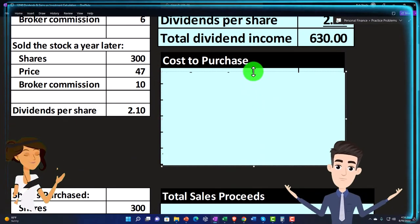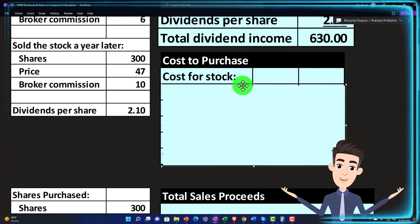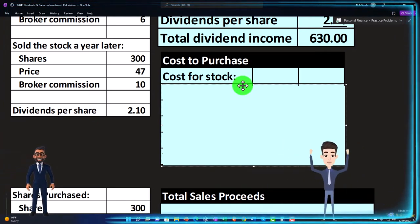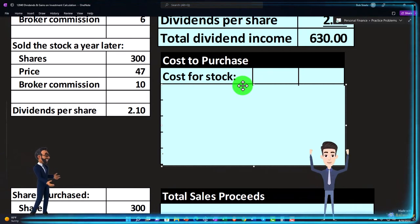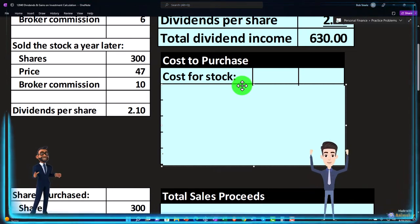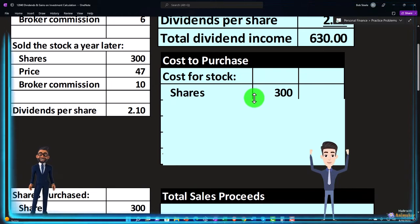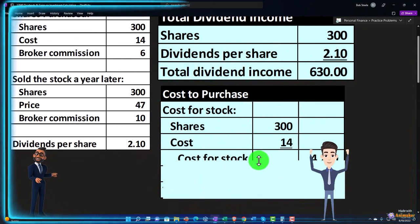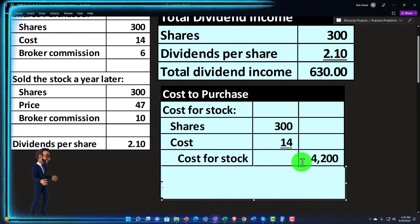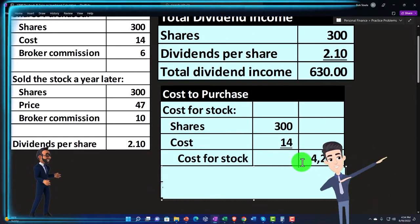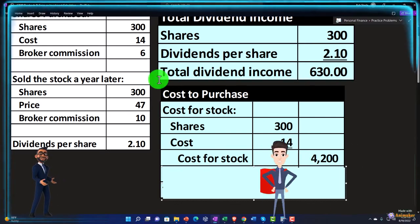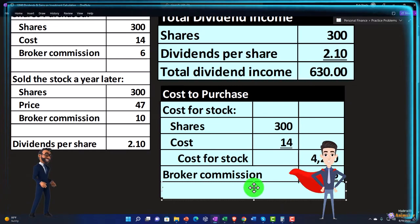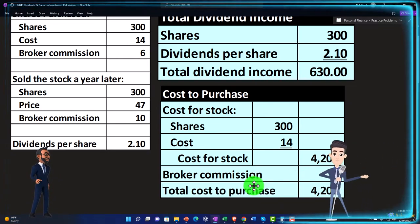The cost to purchase — how much did it cost to purchase the stock? Note that these tables are really good to make in Excel; I highly recommend using Excel to visualize your tables. We have 300 shares purchased at $14 per share, which comes out to $4,200. However, we also have to add the broker commission of $6, so $4,200 plus $6 brings our total cost to purchase to $4,206.